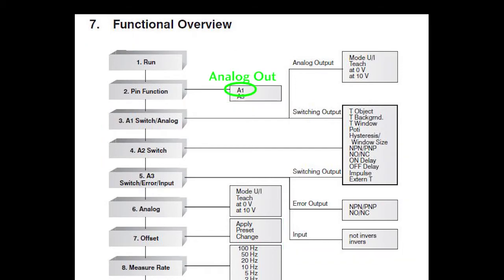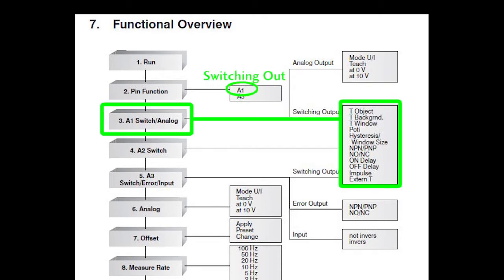For example, if you set up pin A1 up here as an analog output, then down here you'll be given the analog options to refine. If you set it to be a switching output, then down here you'll be able to configure what type of switching output it is.